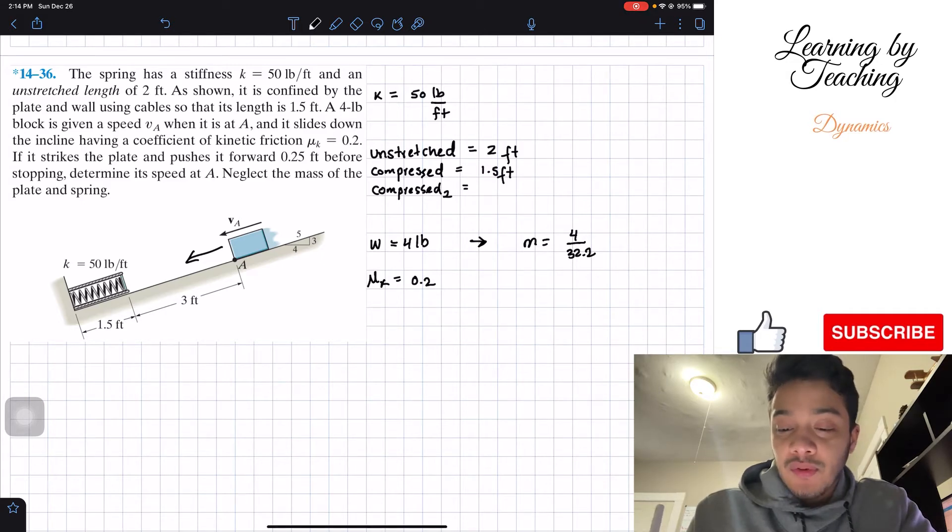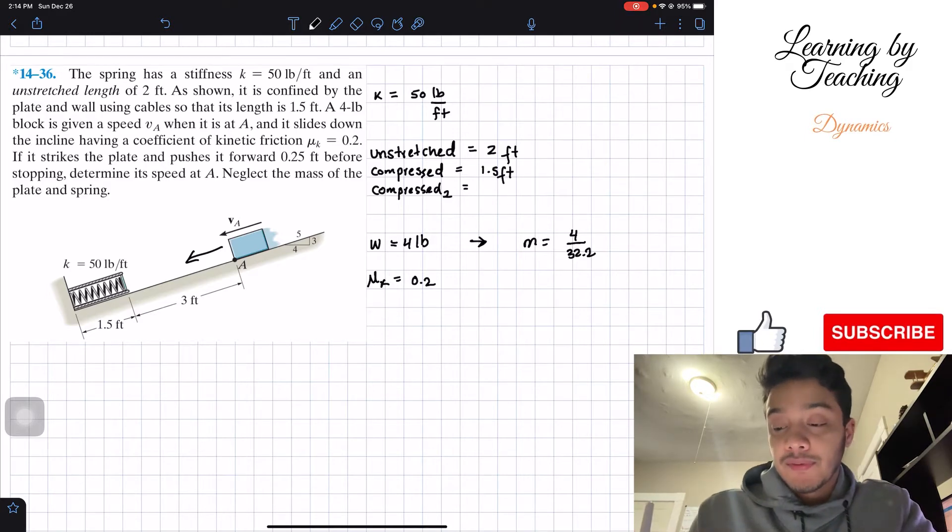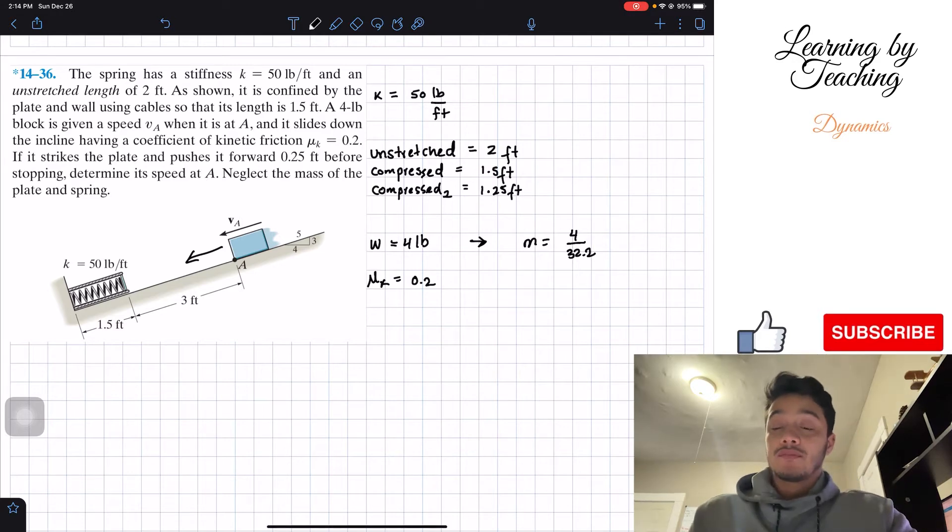And the last thing that they're giving us is that when this hits, it pushes forward 0.25 feet. So I'm going to call it compressed length number 2. And this is going to be equal to, well if I push forward, meaning that the length is going to decrease by 0.25, so that will give me 1.25 feet. That's the length of my spring in the three cases.